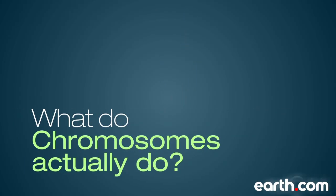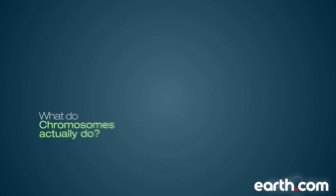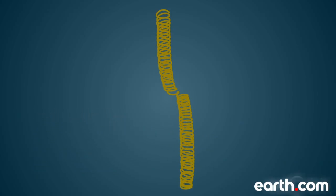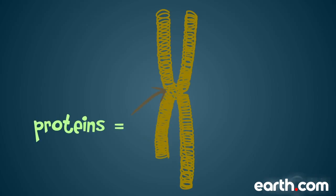So what do chromosomes actually do? The unique structure of chromosomes keeps DNA tightly wrapped around spool-like proteins called histones. Without such packaging, DNA molecules would be too long to fit inside cells.